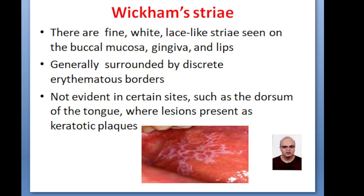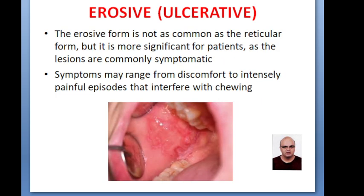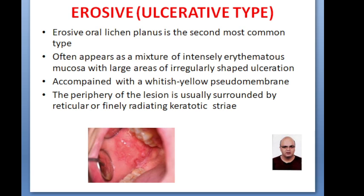These are not evident on the dorsum of the tongue. The erosive form is not as common as the reticular form, but it is symptomatic. The symptoms may range from discomfort to intense painful episodes. The erosive form of Oral Lichen Planus is the second most common type. It appears as a mixture of erythematous areas and large areas of irregularly shaped ulceration. The ulcerative variety is accompanied with a whitish-yellow pseudomembrane.